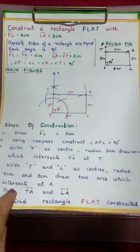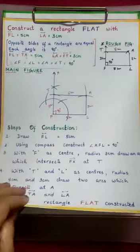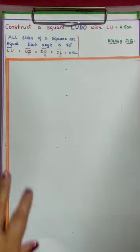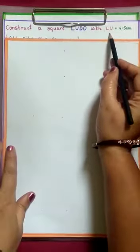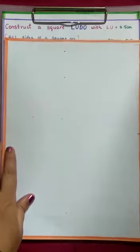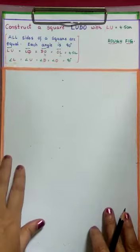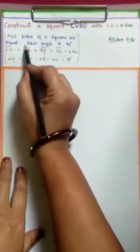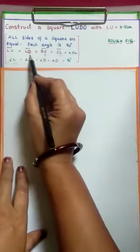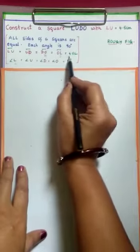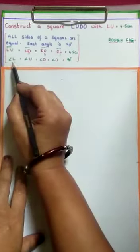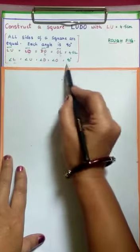Next, we are going to learn how to construct a square. Construct a square LUDO with LU = 4.5 cm. Only one length is given, so 4 lengths are missing. The properties of a square: all sides are equal and each angle is 90 degrees. So LU, UD, DO, OL — all lengths equal to 4.5 cm. Each angle — angle L, angle U, angle D, angle O — equals 90 degrees.